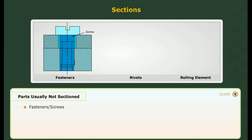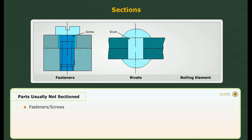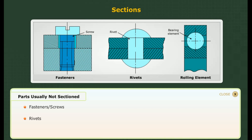Fasteners or screws: Bolts or screws for joining blocks or plates are not sectioned. Rivets: All types of rivets used for joining plates are not sectioned. Rolling elements: The balls or cylinder rollers in a bearing are always shown without sectioning.